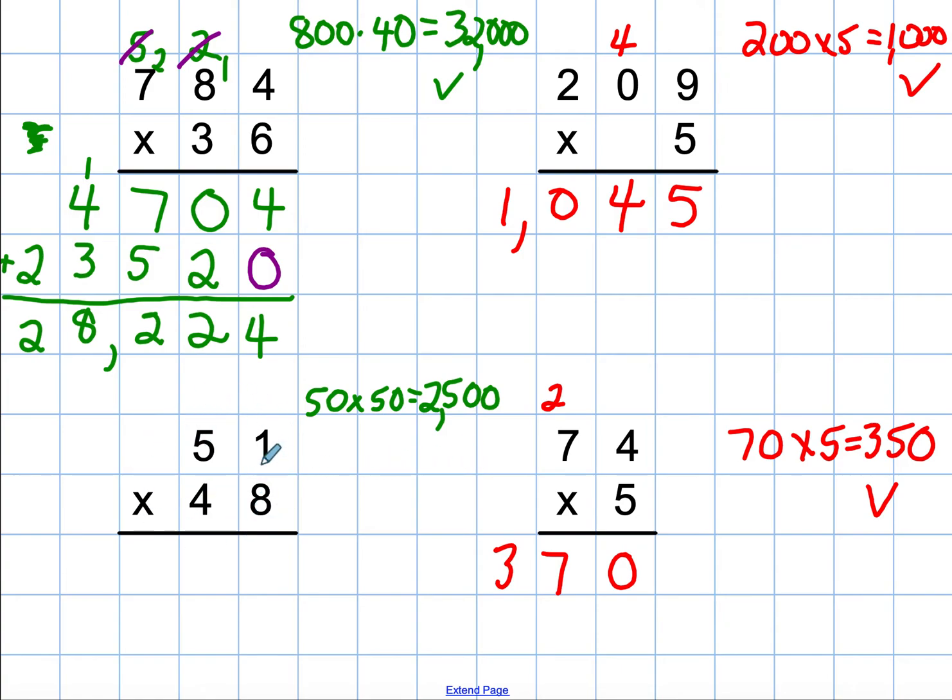Now I'm ready to do the multiplication. Again, I'm going to ignore the 4 to start with. 8 times 1 is 8. 8 times 5 is 40.